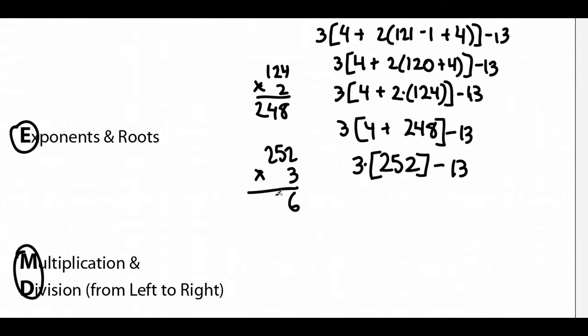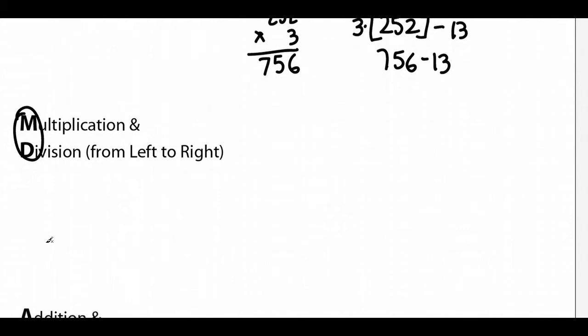3 times 5 is 15. Carry the 1. 2 times 3 is 6. Plus 1 is 7. So now we have 756 minus 13.